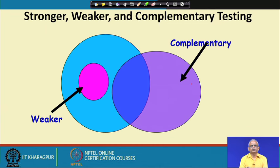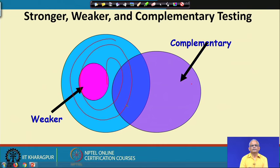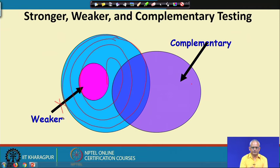If we represent the stronger, weaker, and complementary strategies visually: the green strategy covers all elements of the weaker pink strategy, so as long as we do the green coverage we need not do the weaker testing. But a complementary test strategy executes some additional elements, so we need both strategies — we can only eliminate the weaker one.